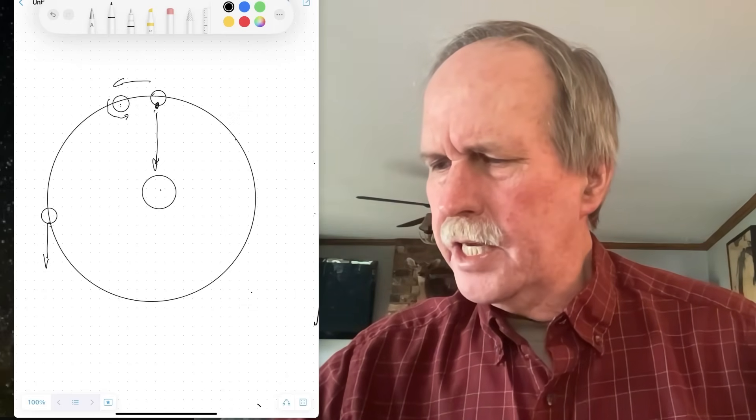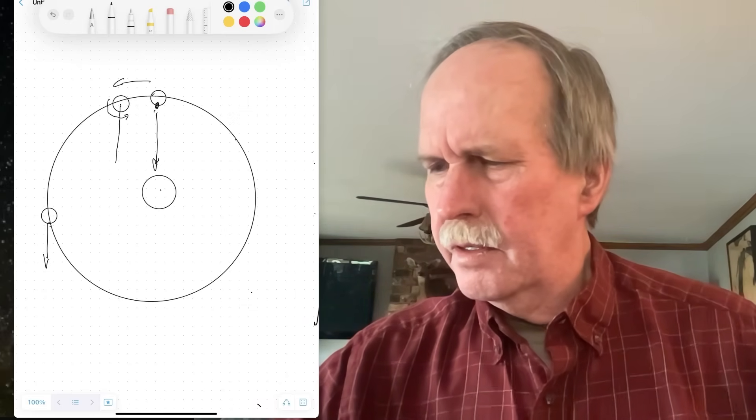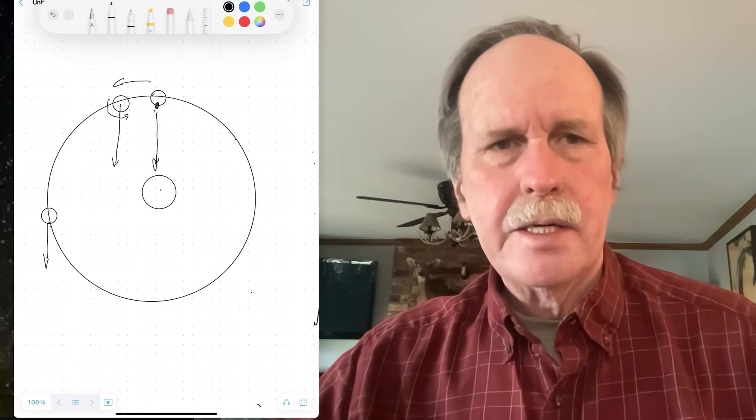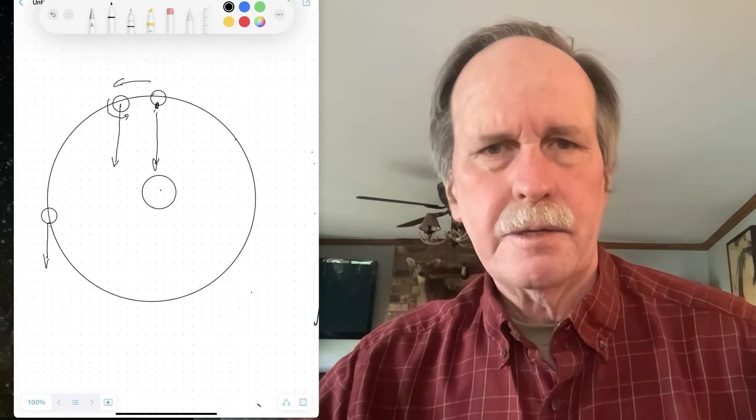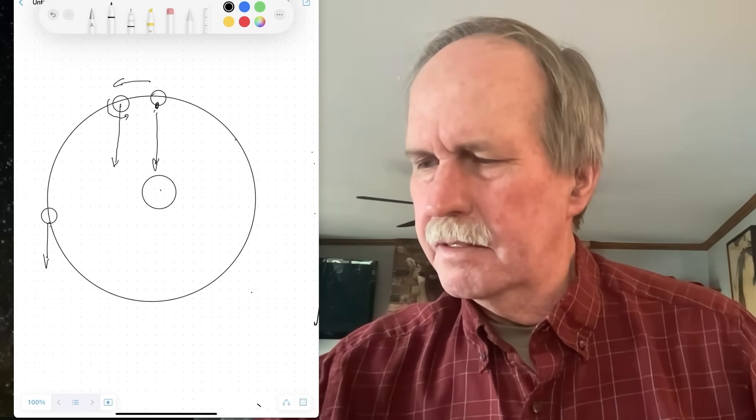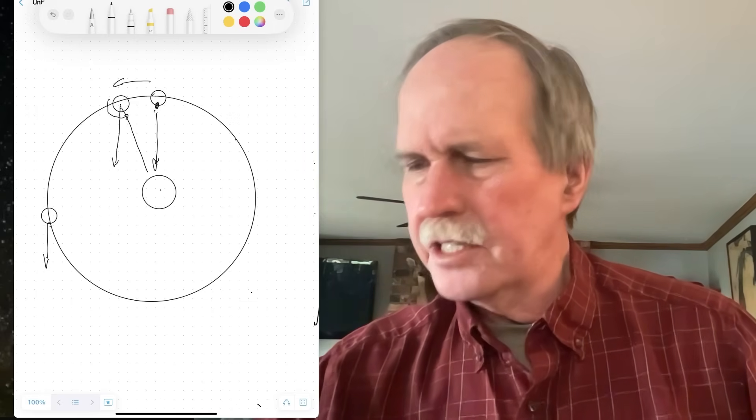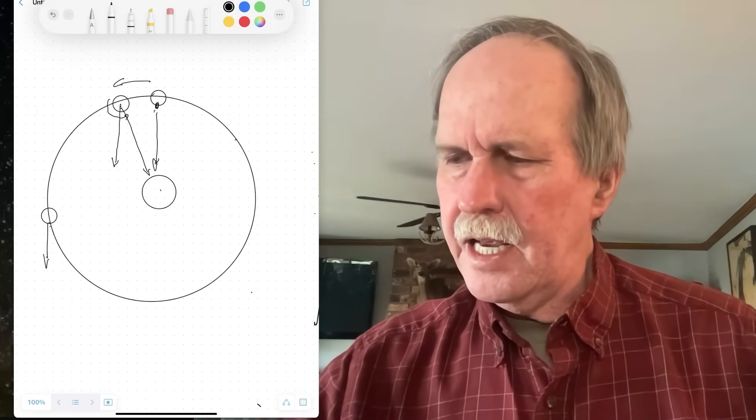In one rotation, the same spot that was at 12 noon on the Earth on the right will be in this position in the Earth on the left. However, the sun is in that direction, and there's an angle here.